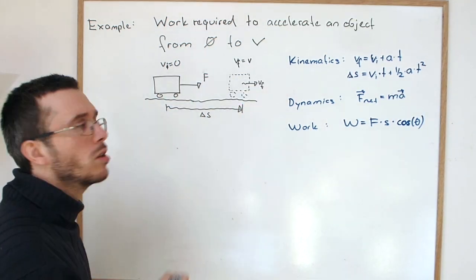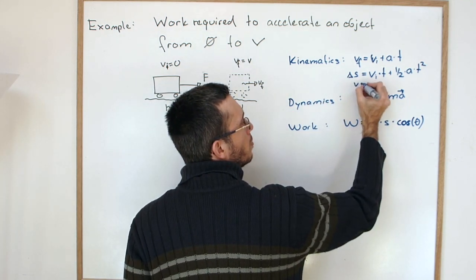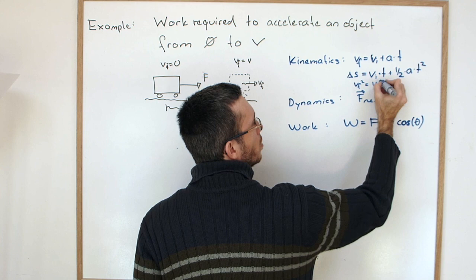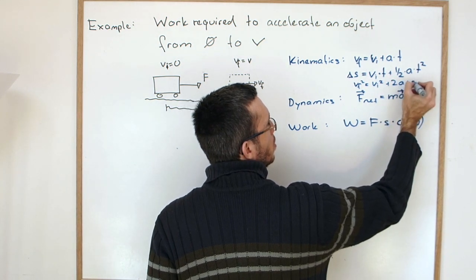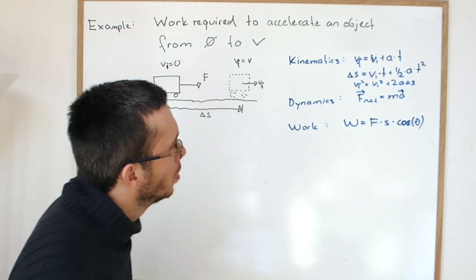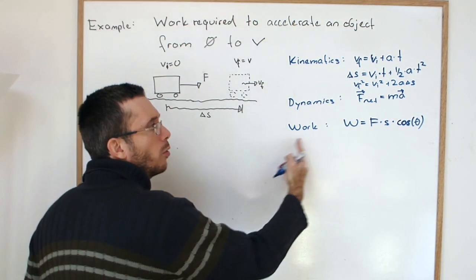From kinematics, we actually know way more. We have another equation that I forgot to write, that is v final squared equals v initial squared plus 2a times change in displacement. Now why don't we just write that one down? Because looking at our work equations,